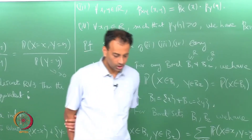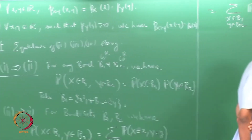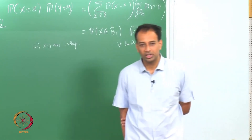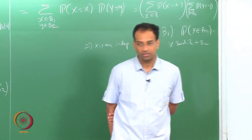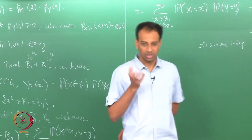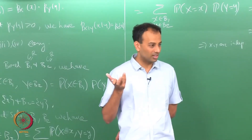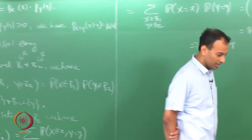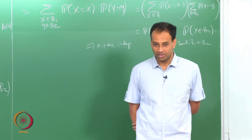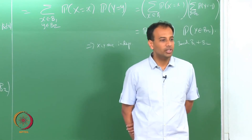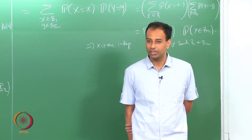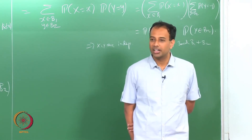Now, if we move on to continuous random variables: in the discrete case, if x and y are discrete they take only countable values on R, and the pair (x, y) necessarily takes only countable values on R², since the Cartesian product of two countable sets is countable. However, in the continuous case this is not so simple. If x is a continuous random variable and y is a continuous random variable, it need not be true that x and y are jointly continuous.